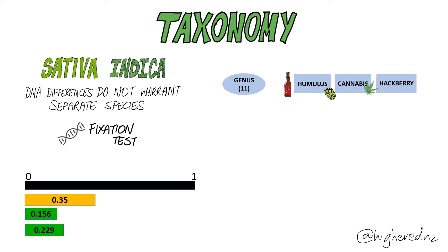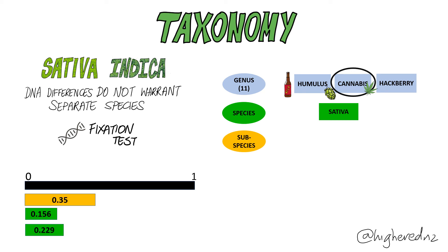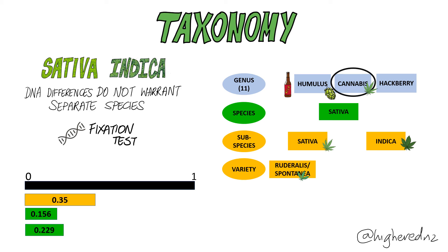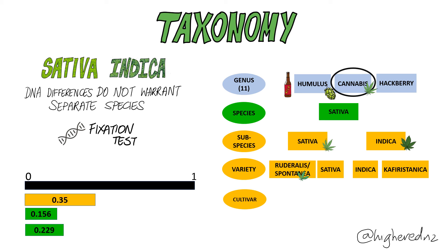This means in our classification we have the genus Cannabis, the species Cannabis sativa, then subspecies sativa and indica. Below that we have the variety level: for sativa we have the wild type — ruderalis or spontanea — and the domesticated sativa, as well as the domesticated indica and the wild type indica. From there we have cultivars underneath.